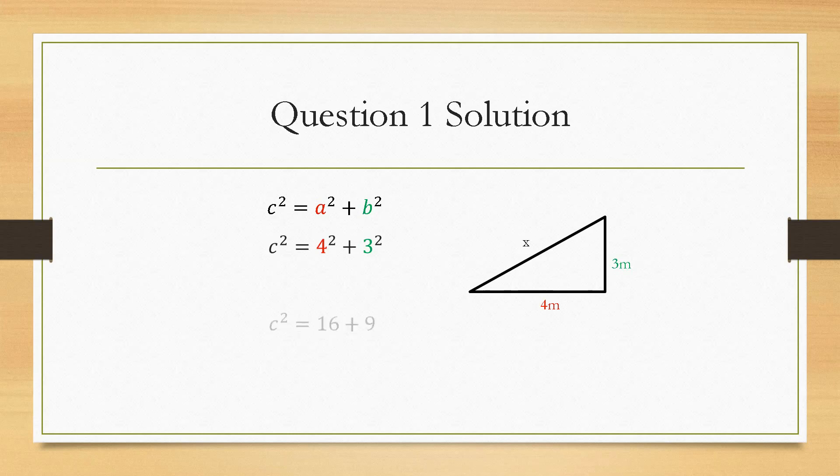So, we pop the numbers in and 4 squared will give you 16 and 3 squared will give you 9. Add them together will give us 25. Now that is for c squared, so in order to get c we have to square root it.